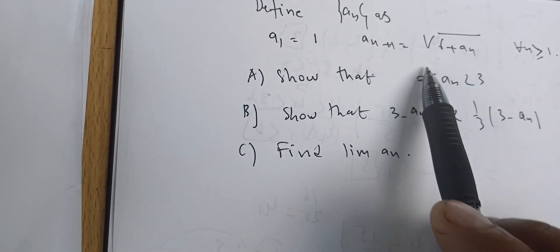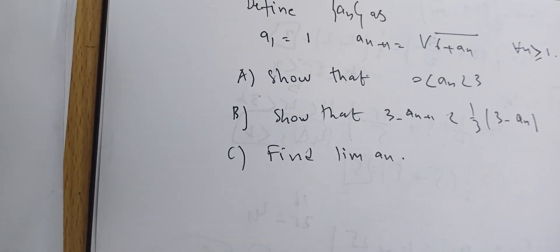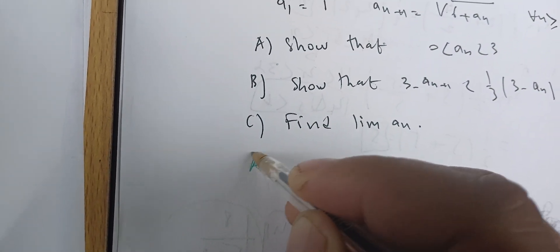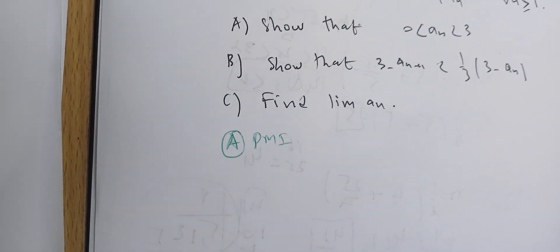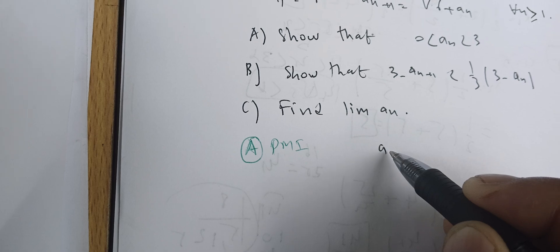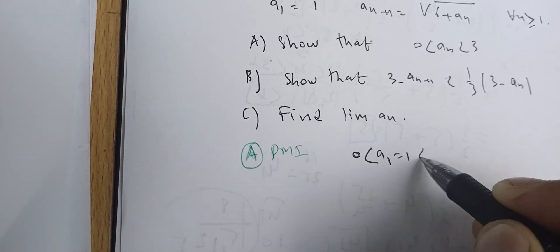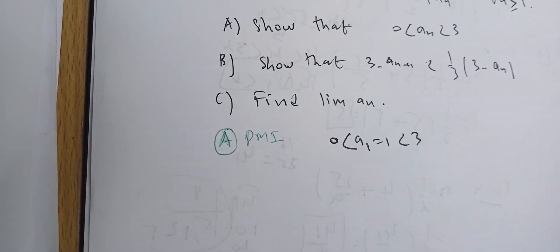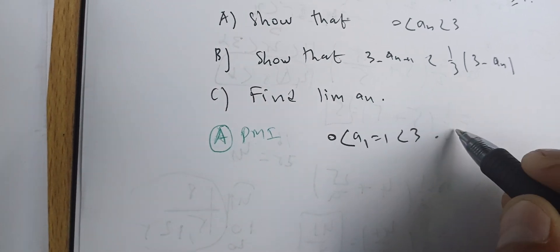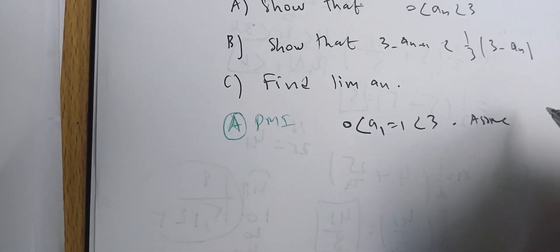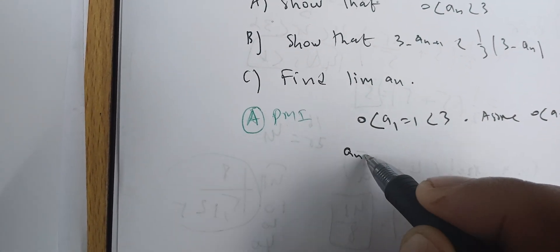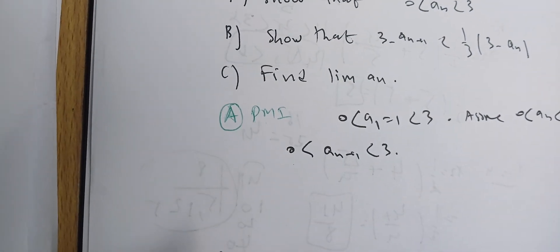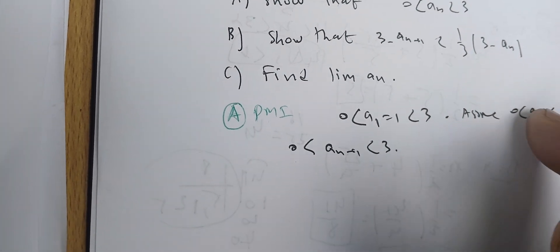To prove that aₙ ∈ (0, 3) for all n, we use the principle of mathematical induction. For the base case, a₁ = 1, which is indeed between 0 and 3. For the inductive step, we assume that aₙ is between 0 and 3 and aim to prove that aₙ₊₁ is also between 0 and 3.